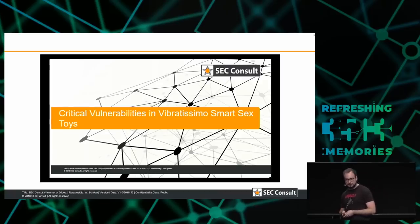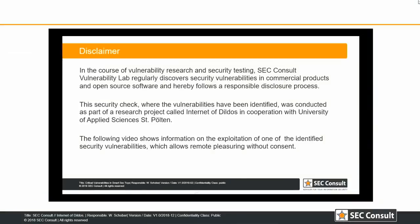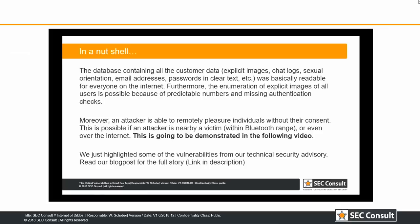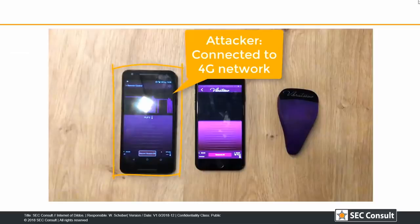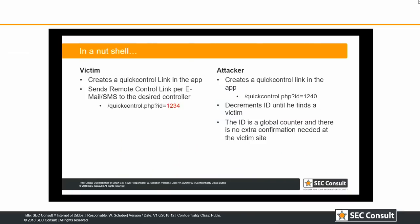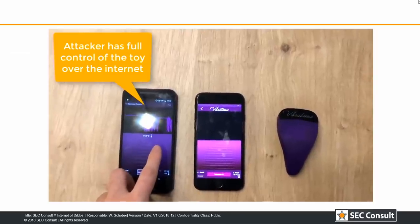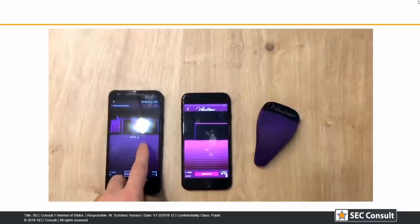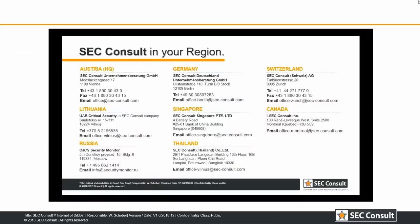I'll show a video where I'm doing exactly that. On the right side we see an attacker device connected to the normal mobile network. The attacker creates their own Quick Control link and decrements the ID. On the left side is another smartphone connected to Wi-Fi for internet access and via Bluetooth to the smart sex toy. The attacker device is able to control it — there is no confirmation whatsoever, so you can directly control all the devices.